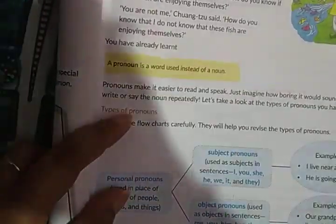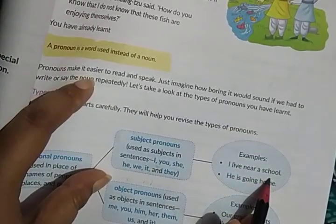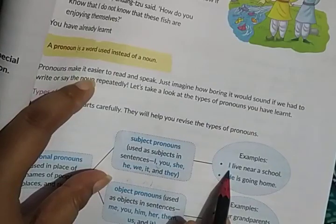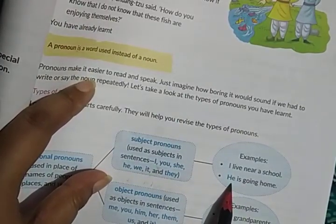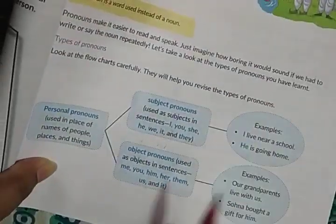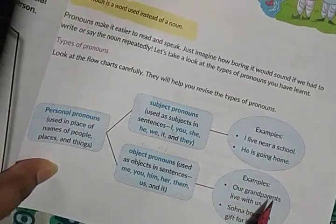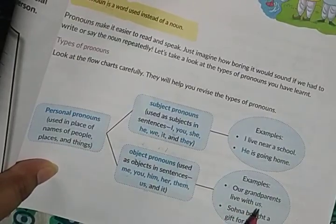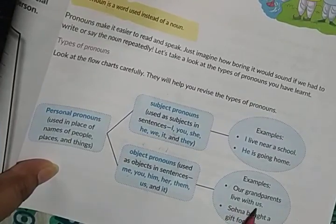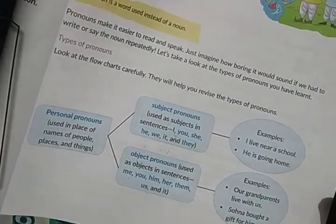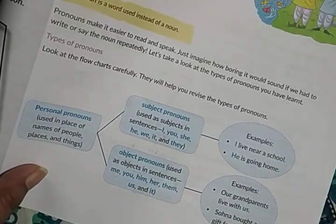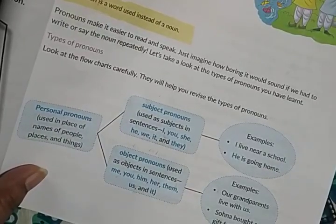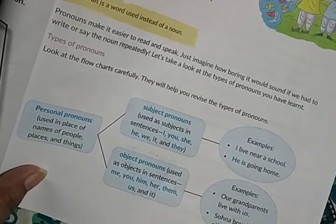For example: 'I live near a school' — here 'I' is a subject pronoun because it is used as the subject. 'He is going home' — 'he' is also a subject pronoun. For object pronouns: 'Our grandparents live with us' — 'us' is an object pronoun. 'Han bought a gift for him' — 'him' is used as an object, so it is an object pronoun.